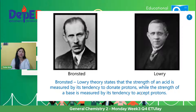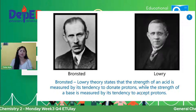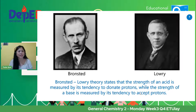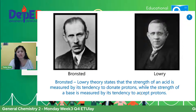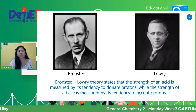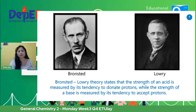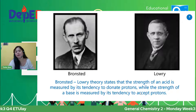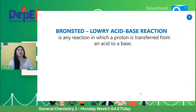Itong Bronsted-Lowry Theory was proposed by two scientists, Bronsted and Lowry. It states that the strength of an acid is measured by its tendency to donate protons, while the strength of a base is measured by its tendency to accept protons. So dito, na-measure daw yung acidity niya — strength of its acidity — based sa kanyang capability to donate protons and the other one to accept protons.